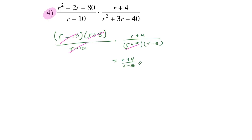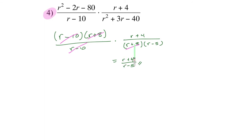Number 4 — again, I'm going to start by factoring. I can factor the numerator as r minus 10 times r plus 8, using two numbers that multiply to 80 and subtract to give 2. Down here, two numbers multiply to 40 and subtract to give 3, giving r plus 8 times r minus 5. Then I cancel whatever is the same: r minus 10 cancels, r plus 8 cancels. So I have r plus 4 divided by r minus 9.